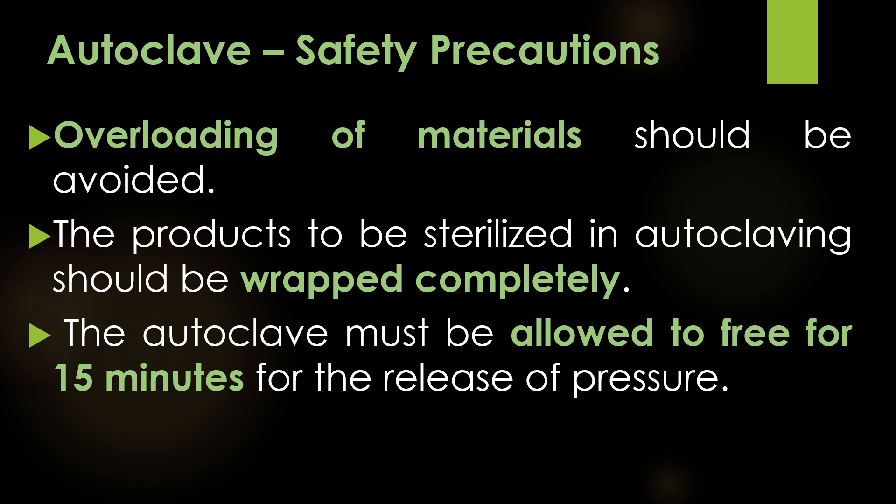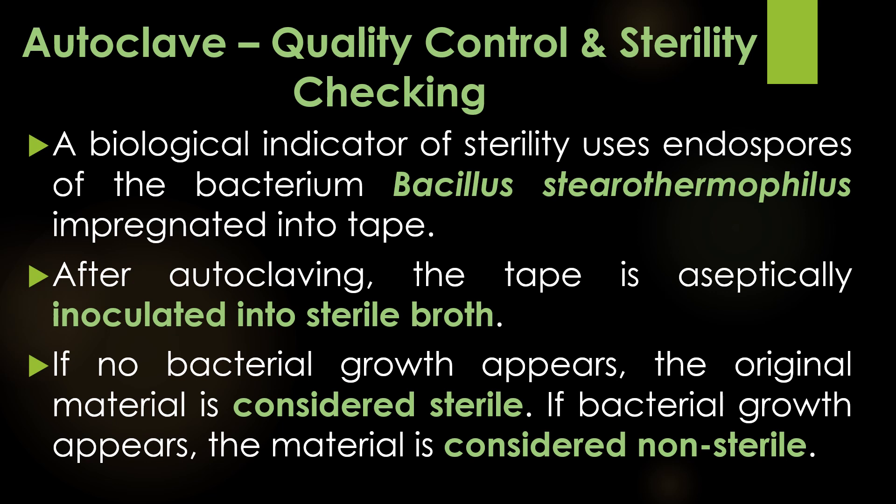Safety precautions during autoclave sterilization: first, overloading of material should be avoided; second, the product to be sterilized should be wrapped completely with paper; third, the autoclave must be allowed to release pressure for 15 minutes before opening. For quality control and sterility checking, a biological indicator uses endospores of the bacterium Bacillus stearothermophilus impregnated into tape. After autoclaving, the tape is aseptically inoculated into sterile broth. If no bacterial growth appears, the material is considered sterile; if bacterial growth appears, the material is considered non-sterile.